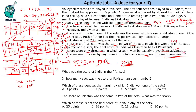India's score in 5 sets and Pakistan's score in 5 sets are now determined. What was the score of India in the 5th set? In the 5th set, India scored 15 points. In how many sets was the score of Pakistan an even number? In 3 of the 5 sets.